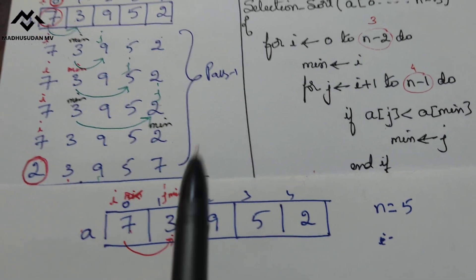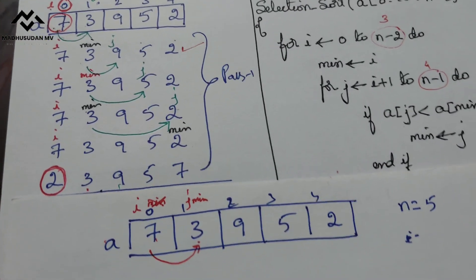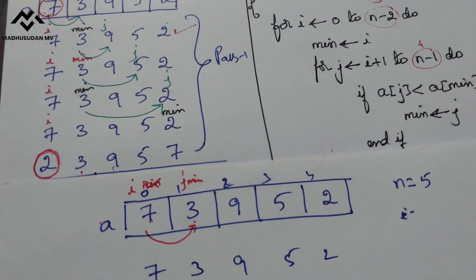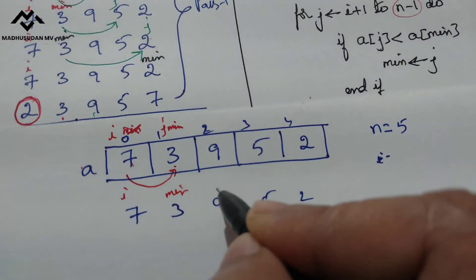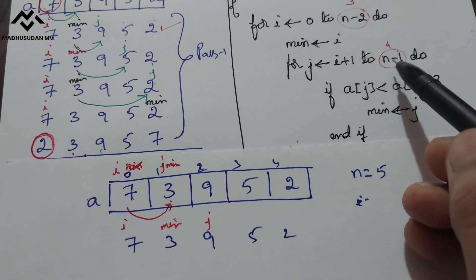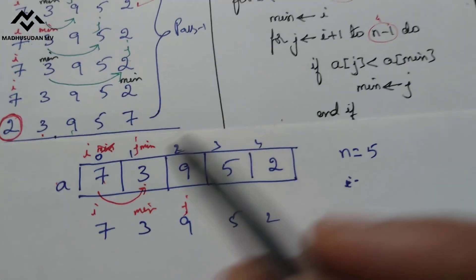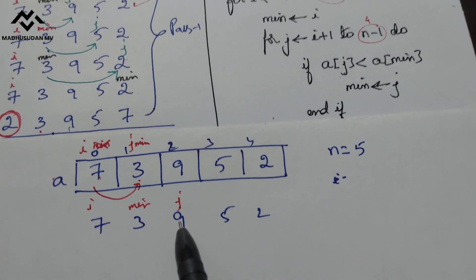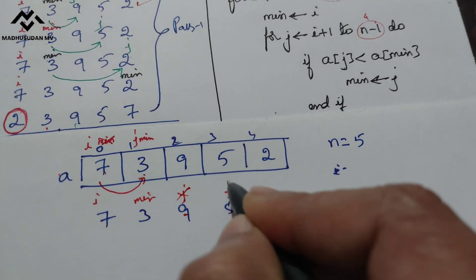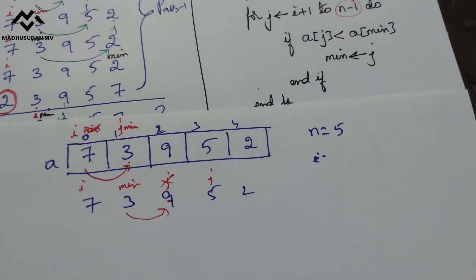That step is over. The array is 7 3 9 5 2. This is my i and this is my min. Incrementing j: j goes to index 2. 2 is less than or equal to 4, true. Now a[j]=9 is less than a[min]=3 — false. So we go to the increment part of the for loop; j becomes 3.